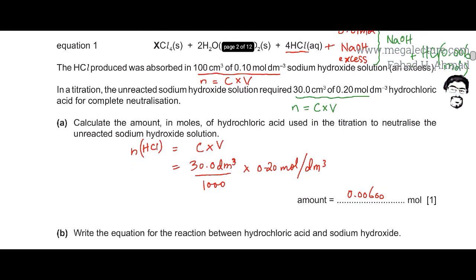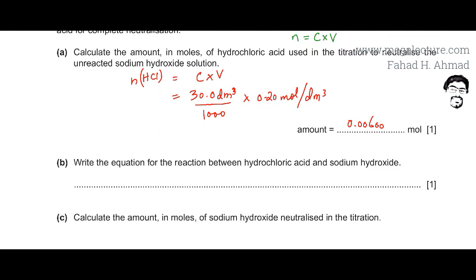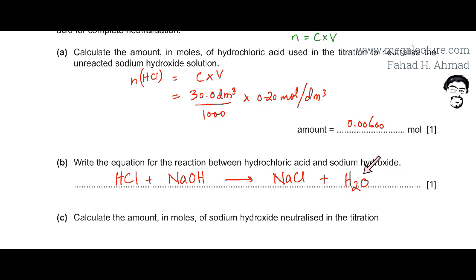Part B asks us to write the equation for the reaction between HCl and NaOH. It's a simple acid-base reaction producing salt and water: HCl + NaOH → NaCl + H₂O.